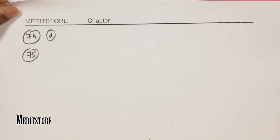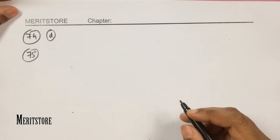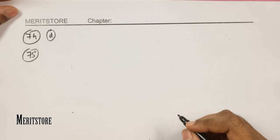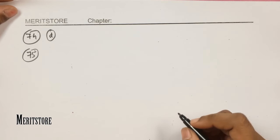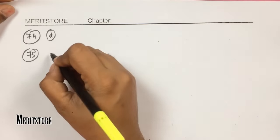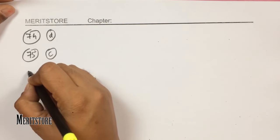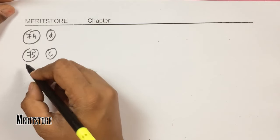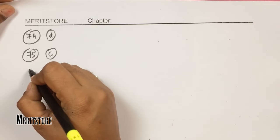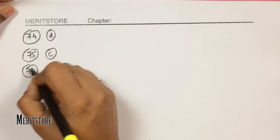Question number 75: flux is used to remove impurities from ores. Flux can remove both acidic and basic impurities — all impurities can be removed. This is option C.